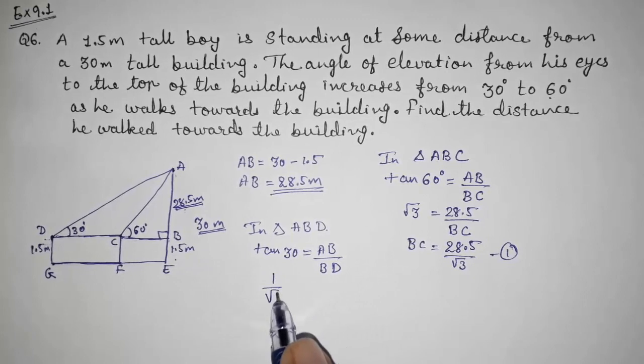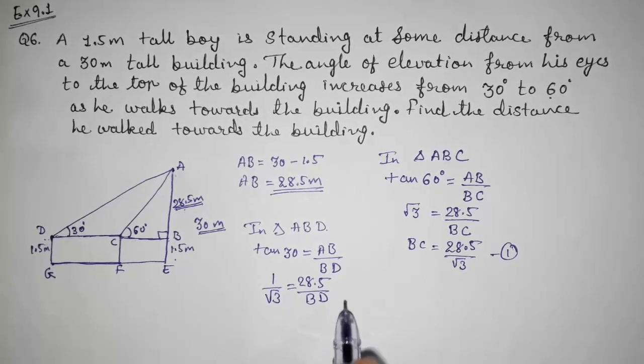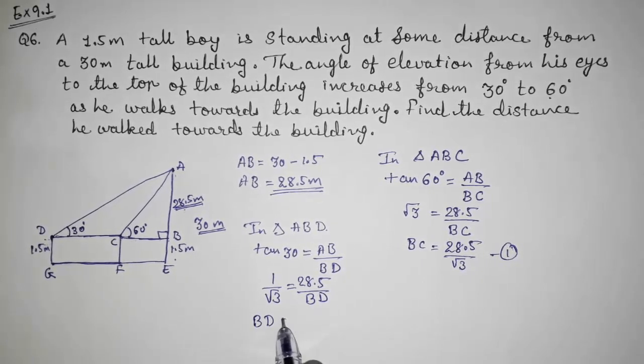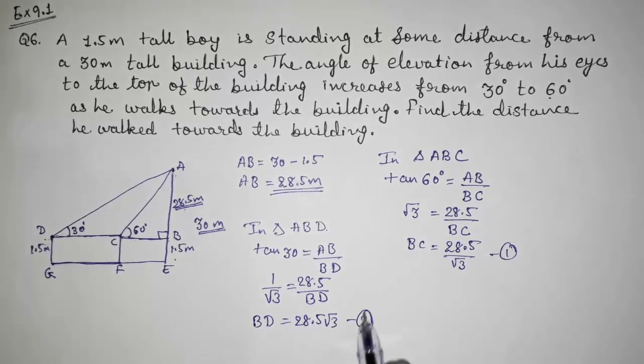So what will happen? Tan 30, that is 1 by root 3. AB that is 28.5 and BD that we want to find out. So take this BD here. BD will be equals to 28.5 root 3, result number 2.